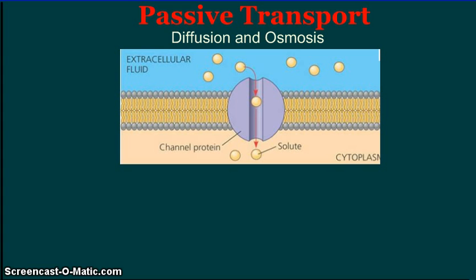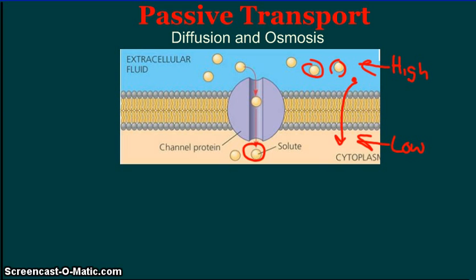Passive transport: diffusion and osmosis. The key here, whenever you look at a diagram like this — and you should expect to see diagrams like this on an assessment — the first thing you want to notice is the molecules that are moving, and notice where the concentration is. Here there's a high concentration, and here there's a low concentration. Molecules that are small and uncharged can simply move through the lipid bilayer from an area of high concentration to low concentration.